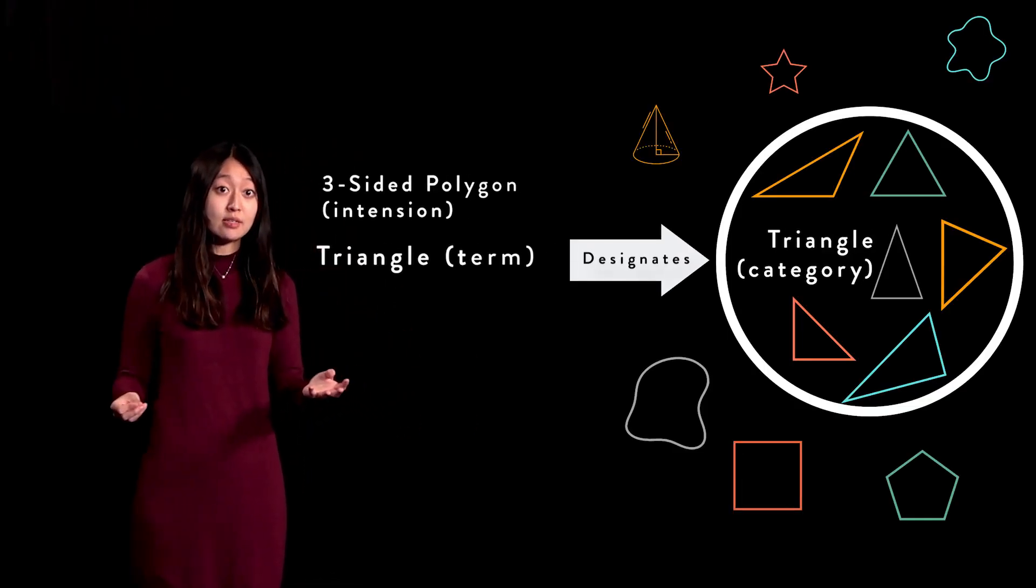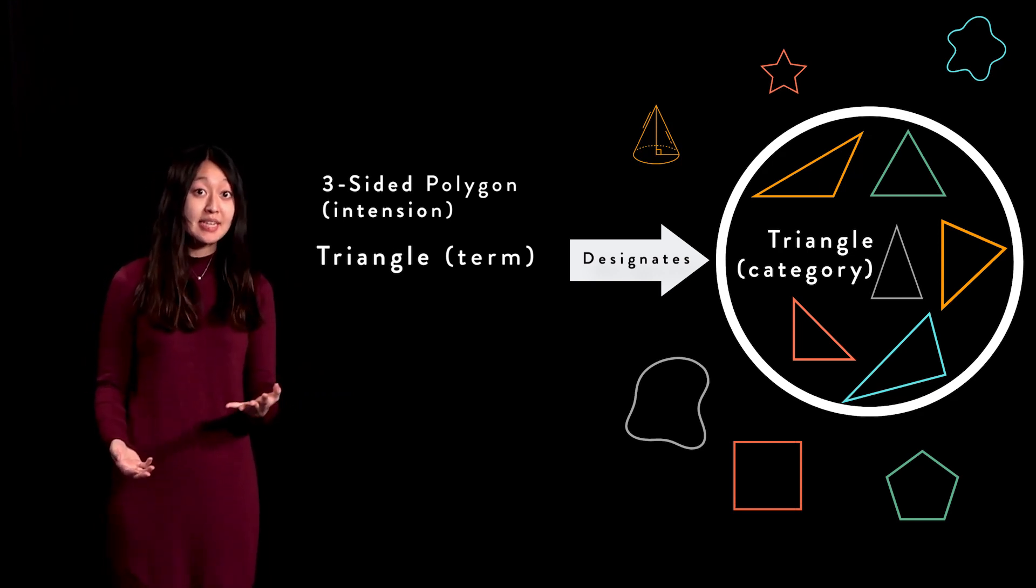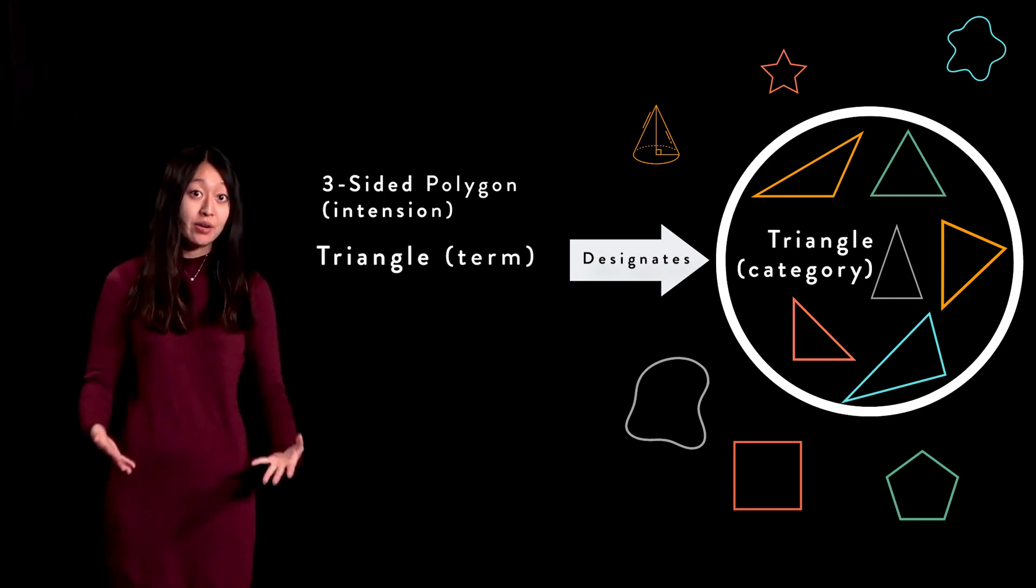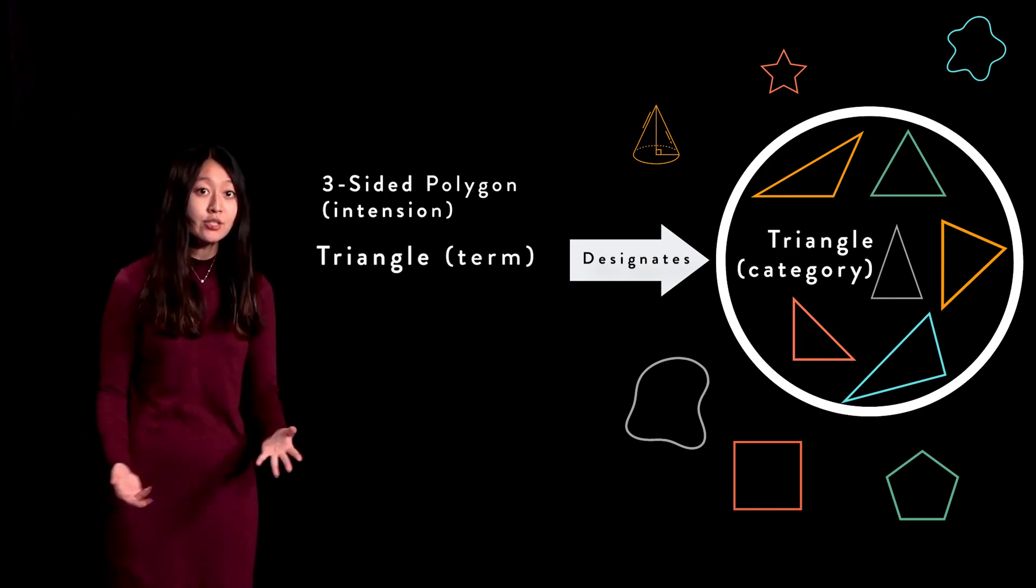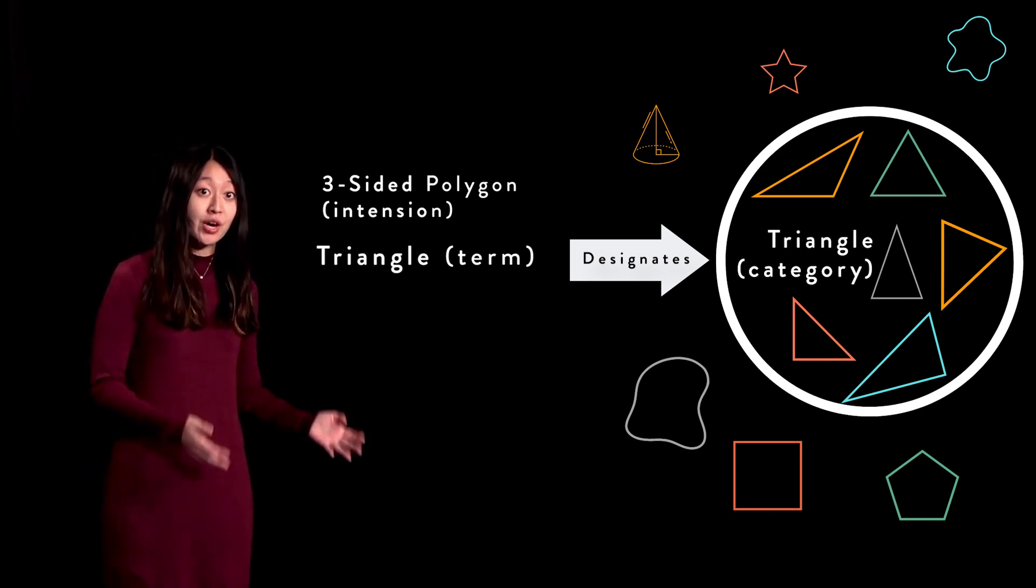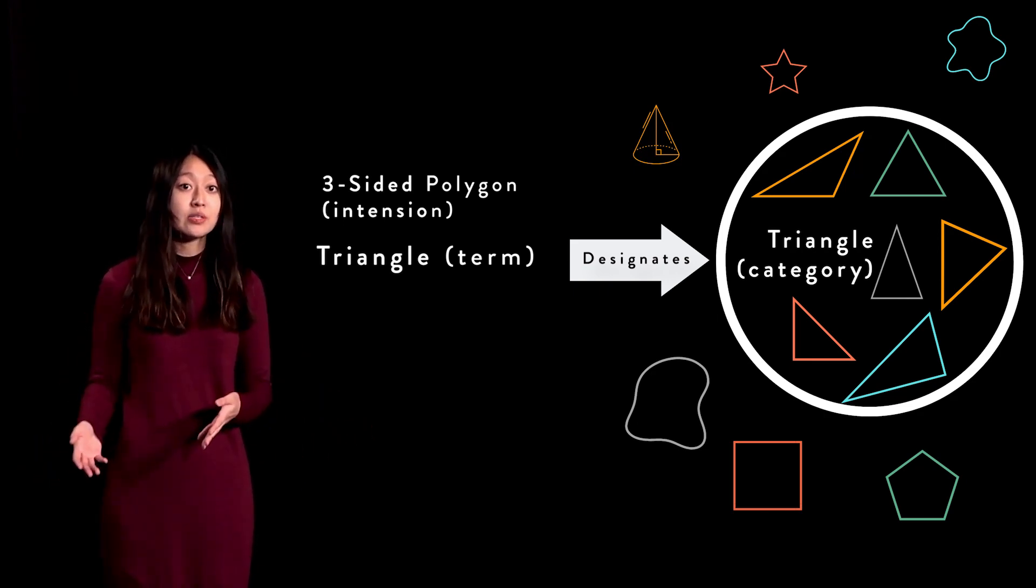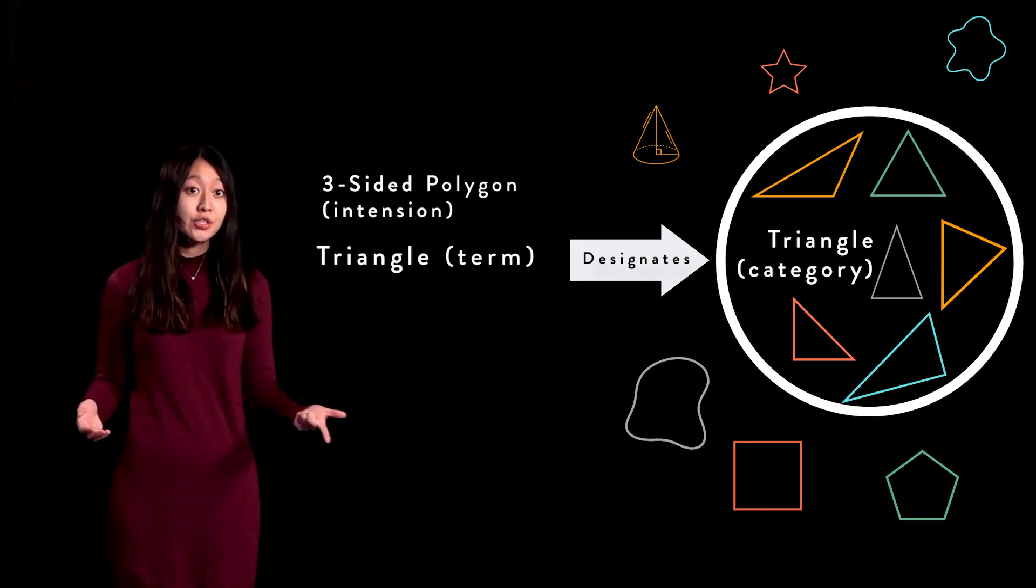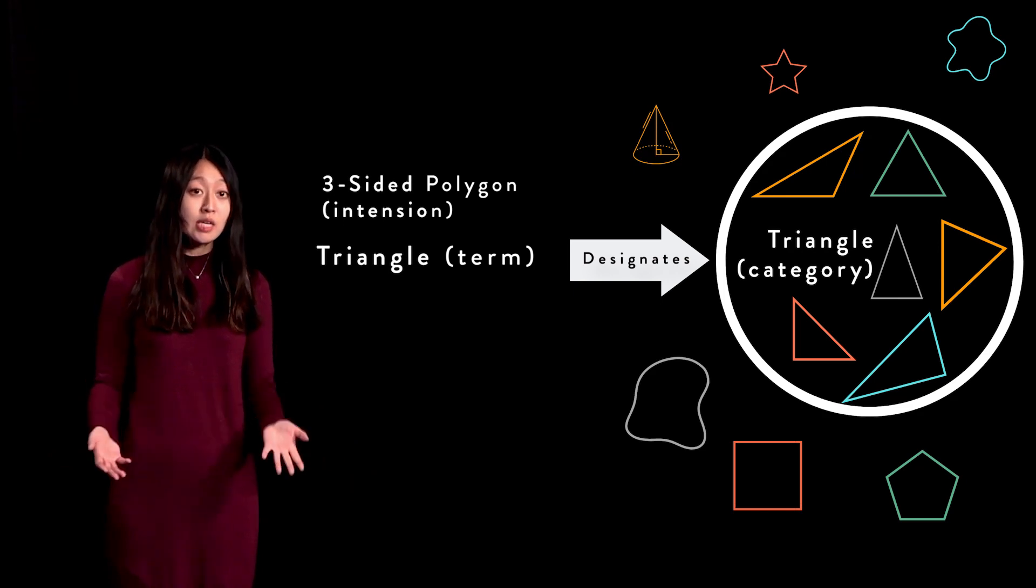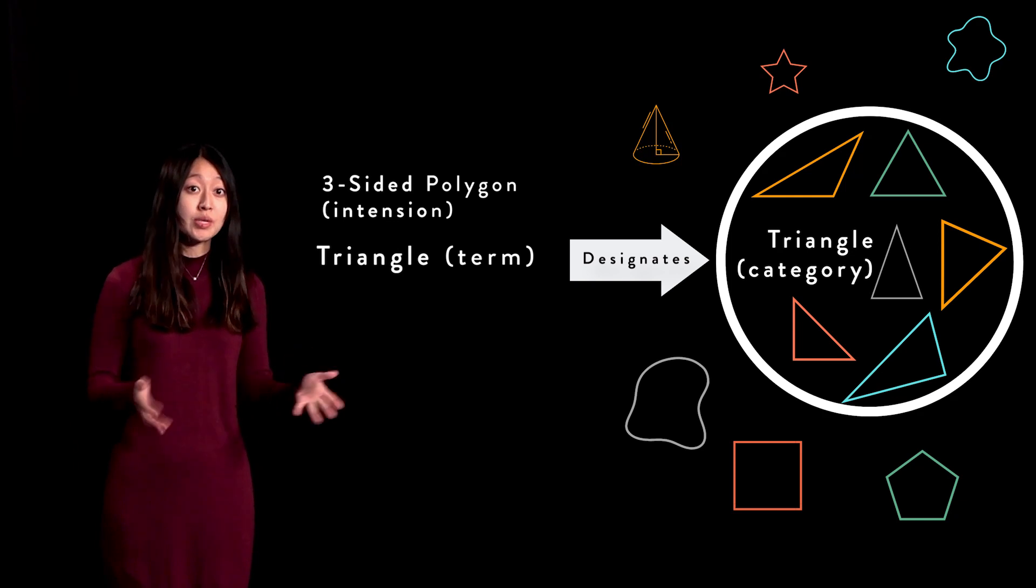Here's a picture to help visualize this. As we can see, when we use the term triangle, we refer to a category that contains the totality of things we call triangle. This totality is the extension of the term triangle. What objects are in this extension is defined by the intension of triangle given. These are the common properties held by things inside the category, but are not held by anything outside the category. In other words, everything inside the circle, or everything in the extension of the term, one has three sides, and two is a polygon. Everything outside of the circle either does not have three sides, is not a polygon, or is neither a polygon nor three-sided.